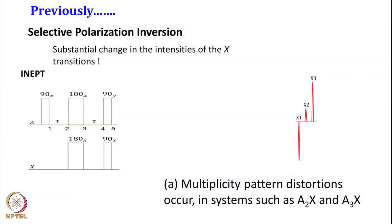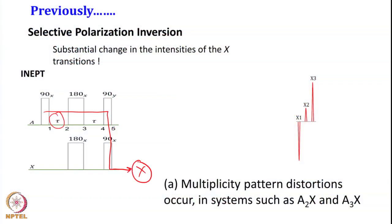Then we looked at another method called INAPT, where we transfer the polarization from A spin to X spin with a series of pulse sequences. We start with a 90-degree pulse, then evolve the magnetization for a tau period where tau is 1/(4J), then apply simultaneous 180-degree pulses on A and X spins, then evolve again for tau — giving total tau of 1/(2J). Then we apply a 90-degree Y pulse on A spin and 90-degree X pulse on X spin. Because of that, sensitivity of the X spin is enhanced, in the order of gamma_A over gamma_X — typically a 4-times enhancement.